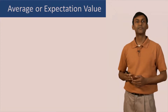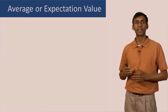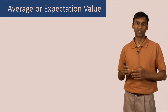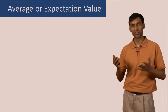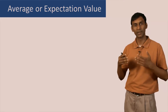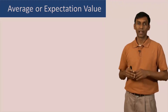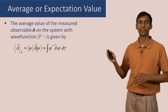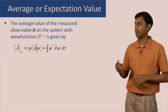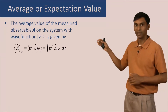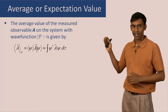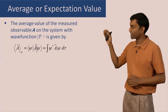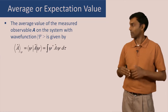From postulate 4, the measurement of a physical quantity on a quantum system gives a definite distribution of eigenvalues, and it is therefore possible to obtain the average value of this distribution. The average value of the measured observable A on a system with wave function psi is given by the integral of psi-star times A times psi, d tau. This is a result we can prove by expanding the wave function in terms of eigenfunctions of the operator A.